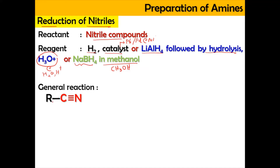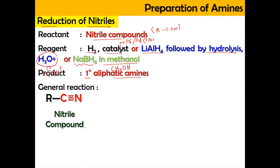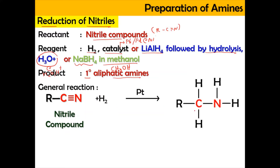The general reaction of the nitrile compound is R-C≡N. This is the nitrile compound, and what we produce at the end is a primary aliphatic amine, because the CN is always at the end of the carbon chain. If you have a nitrile compound and react it with hydrogen in the presence of platinum catalyst, you're going to produce CH2 and NH2 — reduction has happened and a primary aliphatic amine is formed.